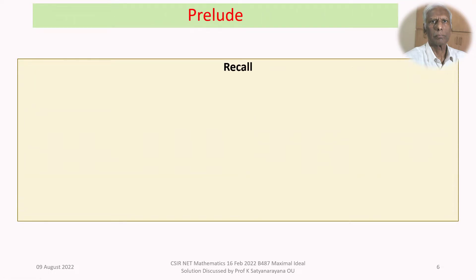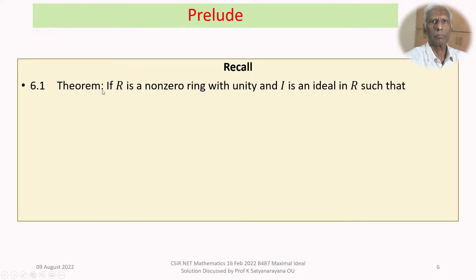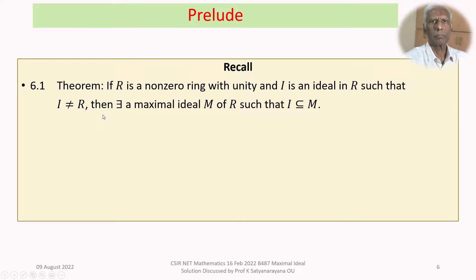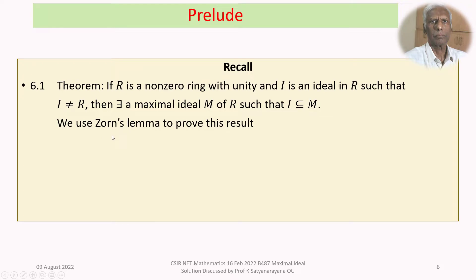Before discussing the problem, let us recall the following results. Theorem: If R is a non-zero ring with unity and I is an ideal in R such that I is not equal to R, then there exists a maximal ideal M such that I is contained in M. This tells you the existence of a maximal ideal in these circumstances.